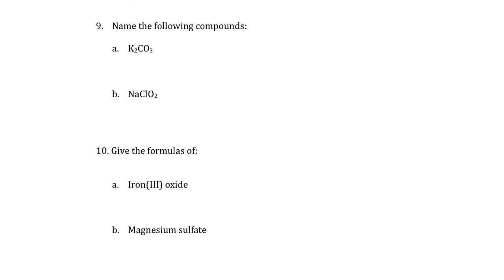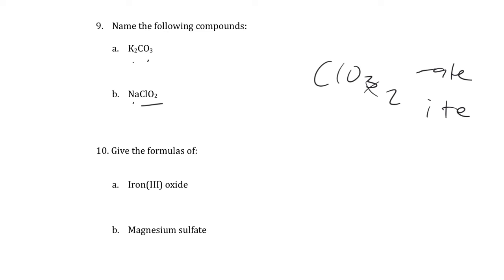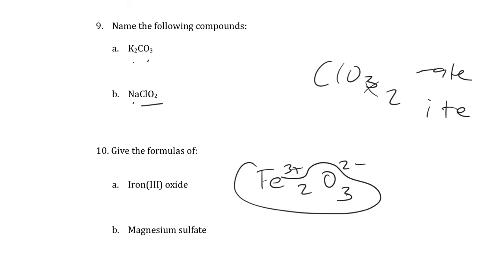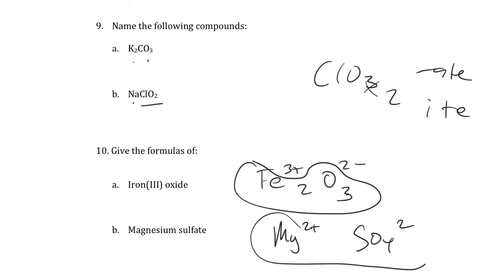A few naming questions: K2CO3 is potassium carbonate — not dipotassium carbonate. NaClO2 is sodium chlorite — ClO3 is chlorate, losing an O gives the ite suffix. Fe2O3 is iron 3 oxide: iron 3+ with oxide 2-. MgSO4 is magnesium sulfate: Mg2+ is magnesium ion and sulfate is 2-.